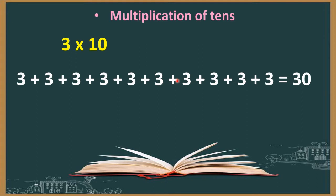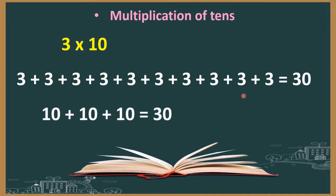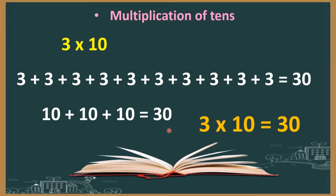Thus, 3 into 10 is 10 times 3, that is 3 times 10. So students, 3 into 10 — the answer is 30.